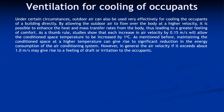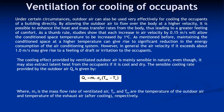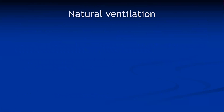If air velocity exceeds one meter per second there is a possibility of a feeling of draft or irritation to the occupant, so there is a limit on air velocity. The cooling effect provided by ventilated outdoor air is mainly sensible in nature, even though it may also extract some latent heat from occupants if it is cool and dry. The sensible cooling rate provided by outdoor air is given by the formula: Q = ṁ·Cp·ΔT, where ΔT is the exhaust temperature minus the outdoor temperature. Here, ṁ_v is the mass flow rate of ventilated air, T_o and T_x are the temperatures of the outdoor air and the exhaust air after cooling.